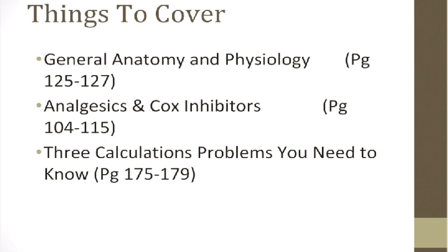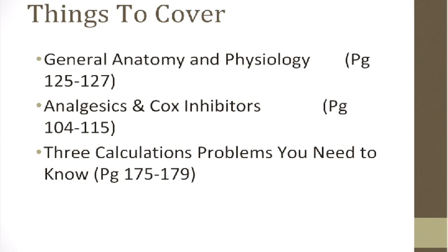The things we're going to talk about today are general anatomy and physiology, found on pages 125 to 127 in your workbook or manual. We'll also be talking about analgesics and COX inhibitors on pages 104 to 115, and the last part will be three calculation problems you need to know, found in your book pages 175 through 179. Note that those are PDF file pages so they might differ a little.